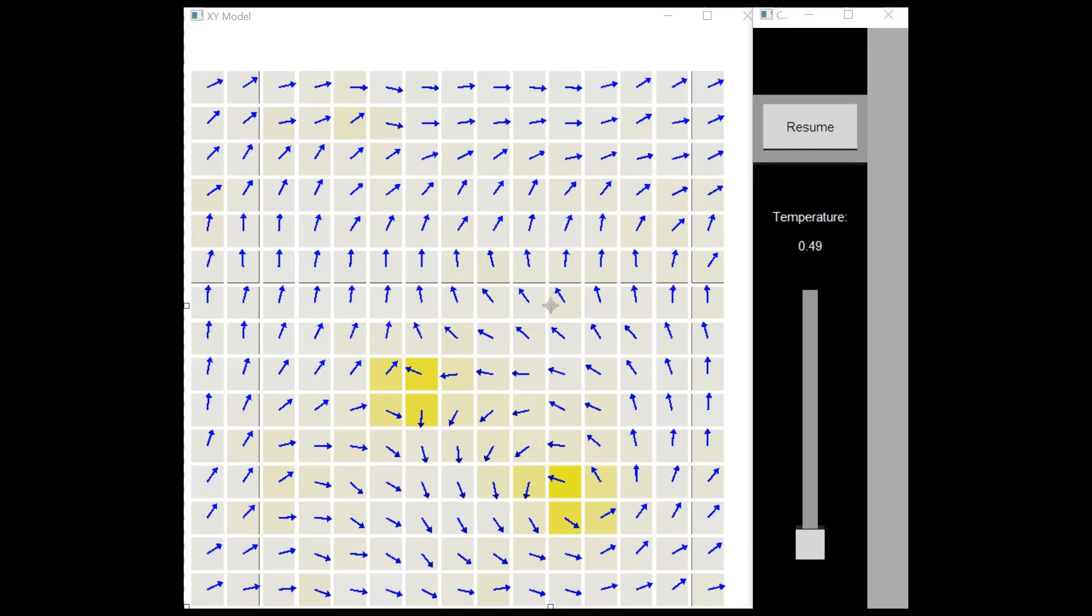White is low energy, meaning generally aligned with neighbors, while yellow is high energy, generally less aligned with neighbors. Vortices, as seen in the current image, are high energy configurations and can be identified by regions with more yellow backgrounds.